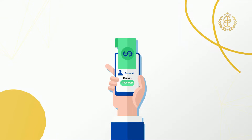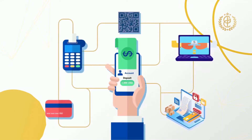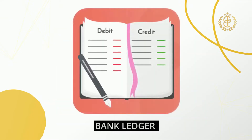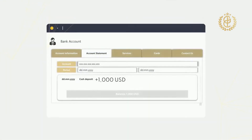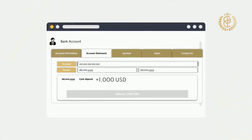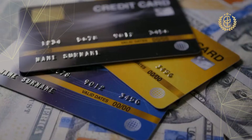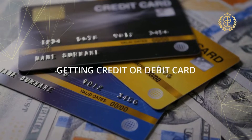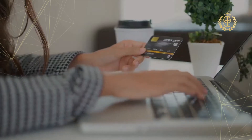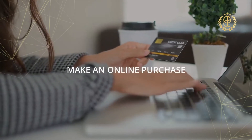If you deposit a thousand dollars cash into your bank account, your money turns to e-money or digital money — a number at the bank ledger. After depositing your money into the bank, you can benefit from financial services such as sending money, getting a credit or debit card to buy merchandise from stores, or making online purchases.